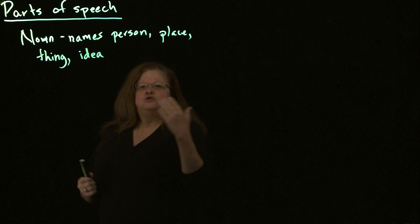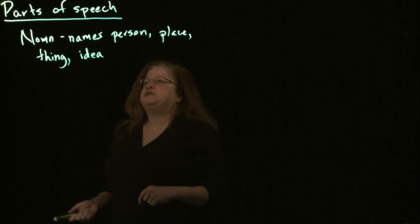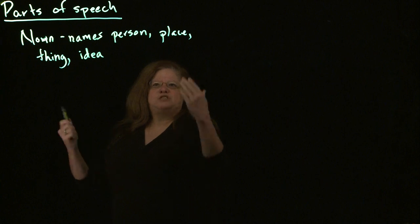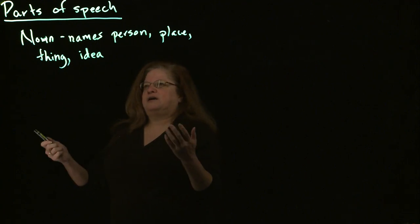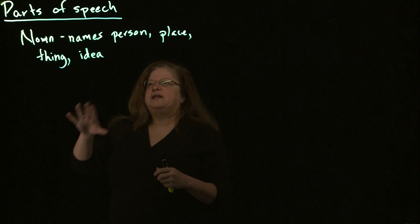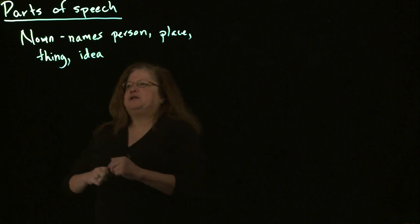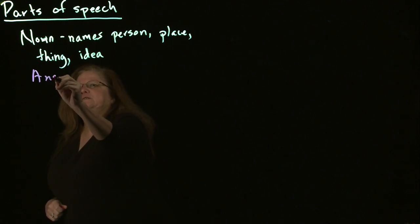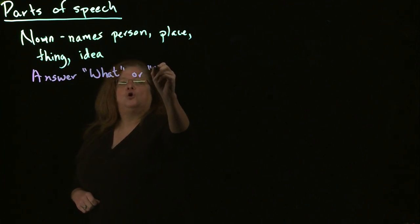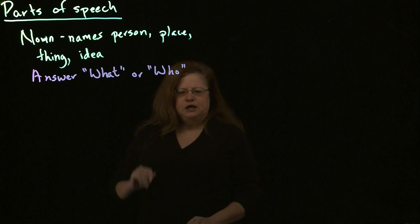So I can name a person — a school teacher, or a specific person, Governor Martinez. I can name a place, the warehouse, Santa Fe. A thing: a car, a cat. An idea: things like love or peace. So a noun is something that names something. One of the things you can do when trying to identify if something is a noun is that it's going to answer the question 'what?' or 'who?' If something answers that question, it's going to be a noun.